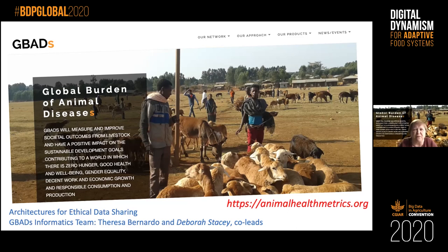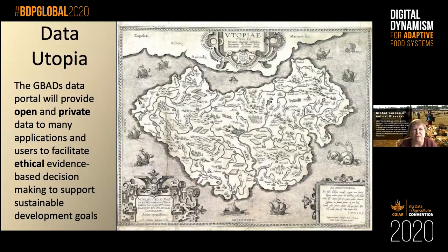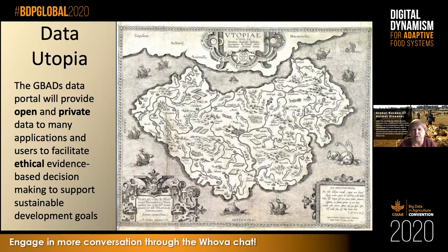As part of the informatics team, we have a modest goal: to create a data utopia for GBADS — a data portal and knowledge engine that will provide access to open and private data for many applications, including our modeling and others' modeling, to facilitate ethical evidence-based decision-making supporting sustainability goals. We have a bunch of challenges to look at around open versus private data sharing. We want to act as trusted brokers of data — not necessarily holding much data ourselves, but giving access to data that's already out there. We want to emphasize machine-to-machine data sharing so modelers and knowledge engines can grab data automatically.